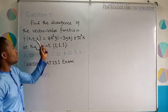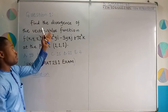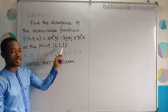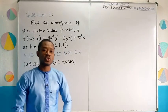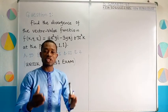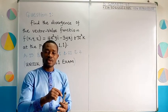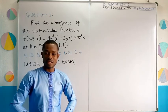And so we are required to determine the divergence of this vector value function at a point 1, 1, 1. Now to do this, all we have to do is simply to take the partial derivative of the component of the vector with respect to the variable defining this component.